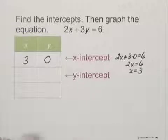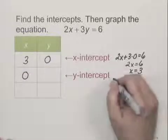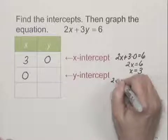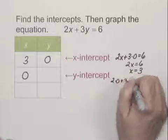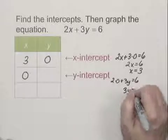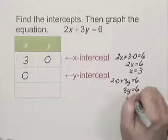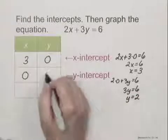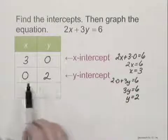To find the y-intercept, we let x equal 0 and solve for y. That would give us 2 times 0 plus 3y equals 6. This is 0, so 3y equals 6, or y equals 2. And that gives us the y-intercept, which is (0, 2).